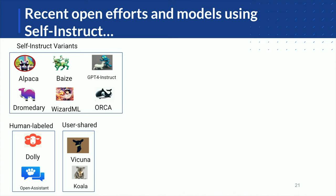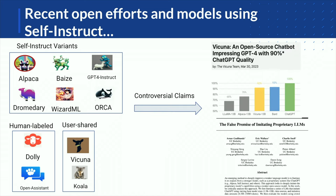This approach has been received really well by the community. Many companies and universities started using our approach and created many different versions of LLaMA-based models, including Alpaca, Bayes, and many others. We also see a lot of different claims from the research community — for example, a claim that Vicuna, an open-source chatbot, achieves about 90% accuracy relative to ChatGPT quality. But other papers show that on reasoning tasks, these models are still far behind proprietary models.